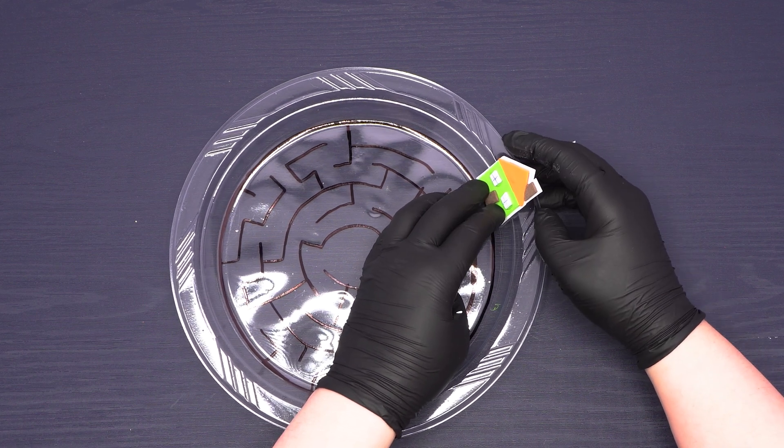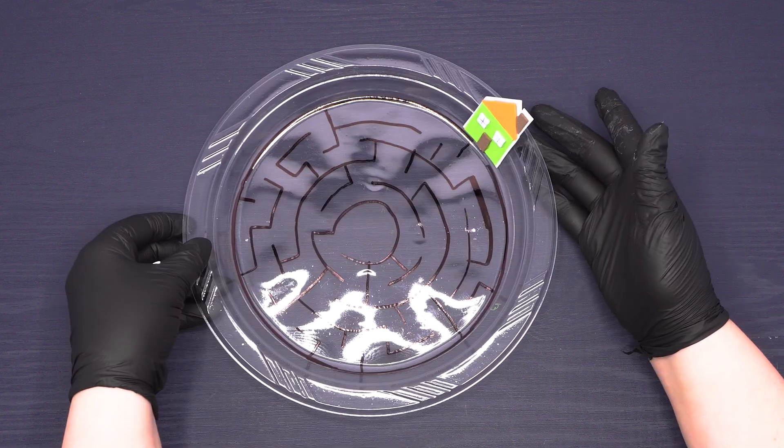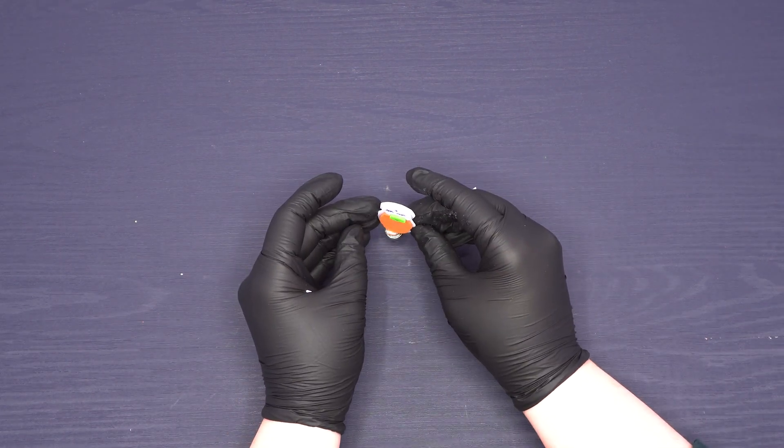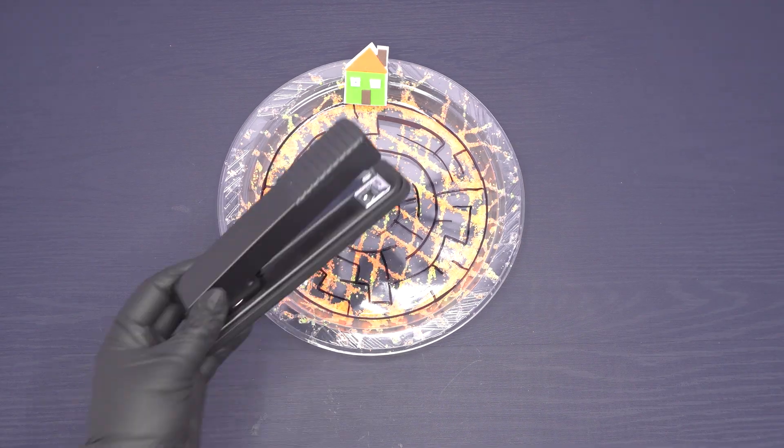Next, glue the house to the edge of the plate at the end point of the maze, which is marked by the opening on its outermost layer. After that, use liquid glue to attach baby Moshe to the flat side of one of the magnets, then allow it to fully dry.